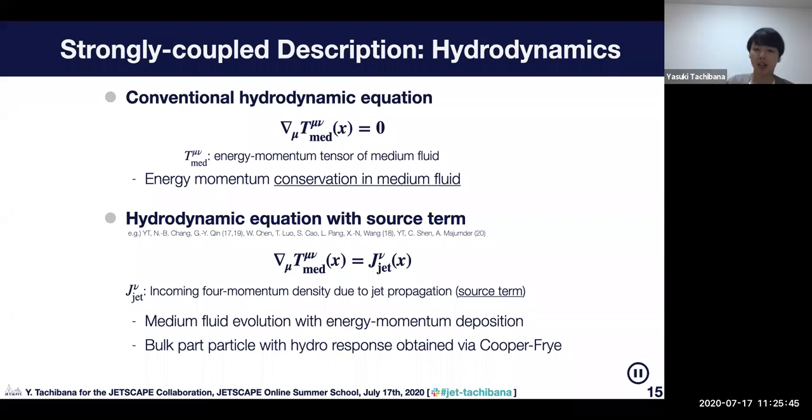They are obtained by Cooper-Frye formula, which Shaun explained in his lecture. This is the standard way to get hadrons from the medium.